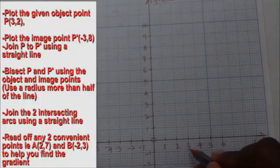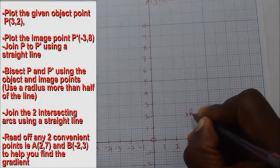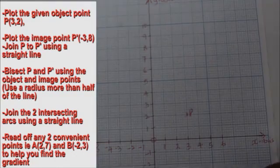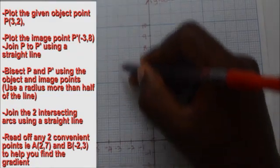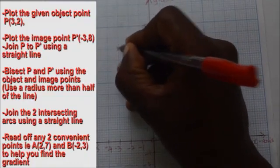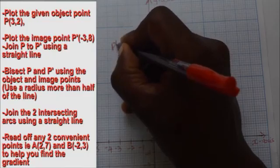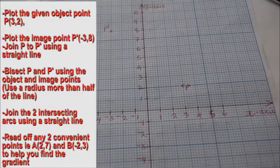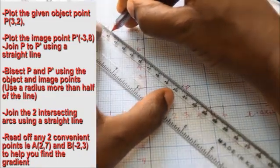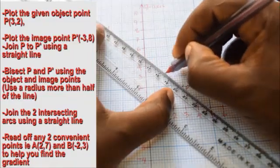Put the object point on the same graph paper, then put the image point on the same graph paper. Join the object point P and its image P' using a straight line.